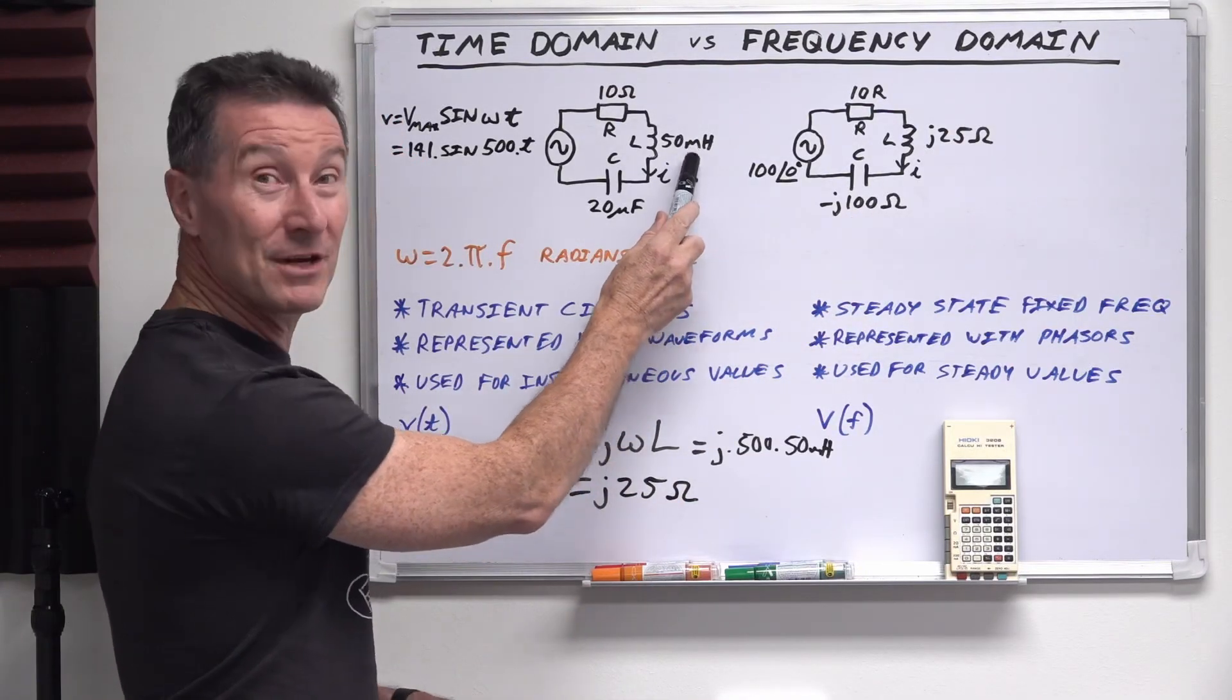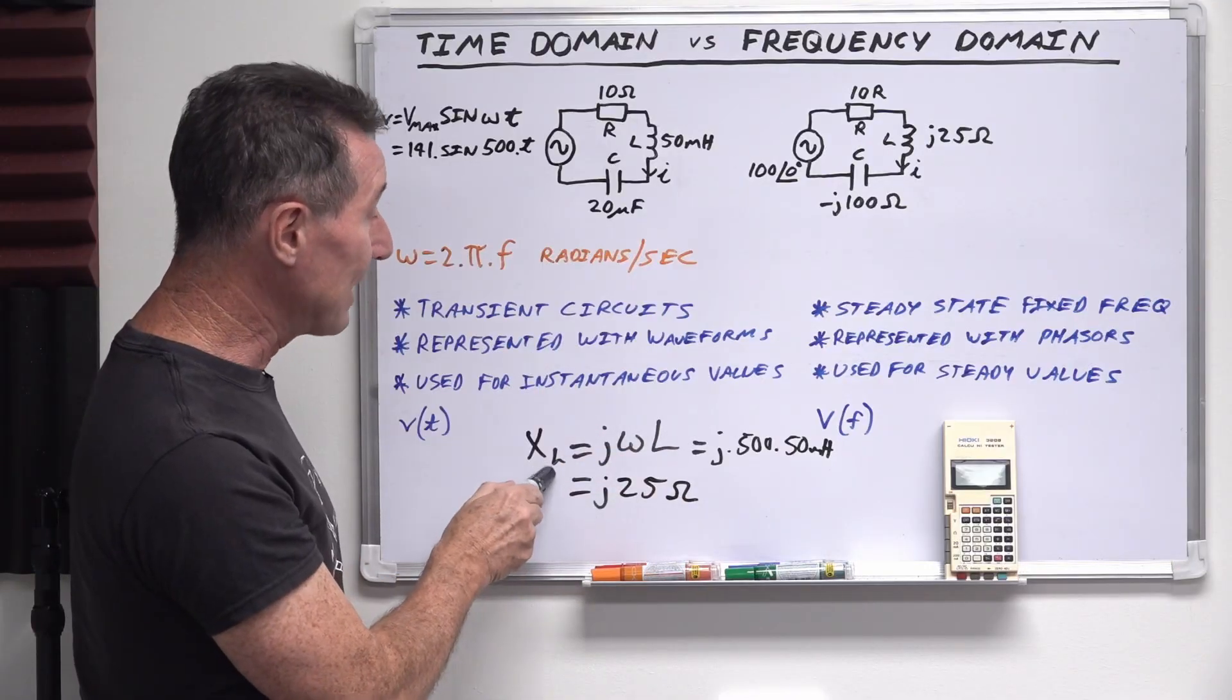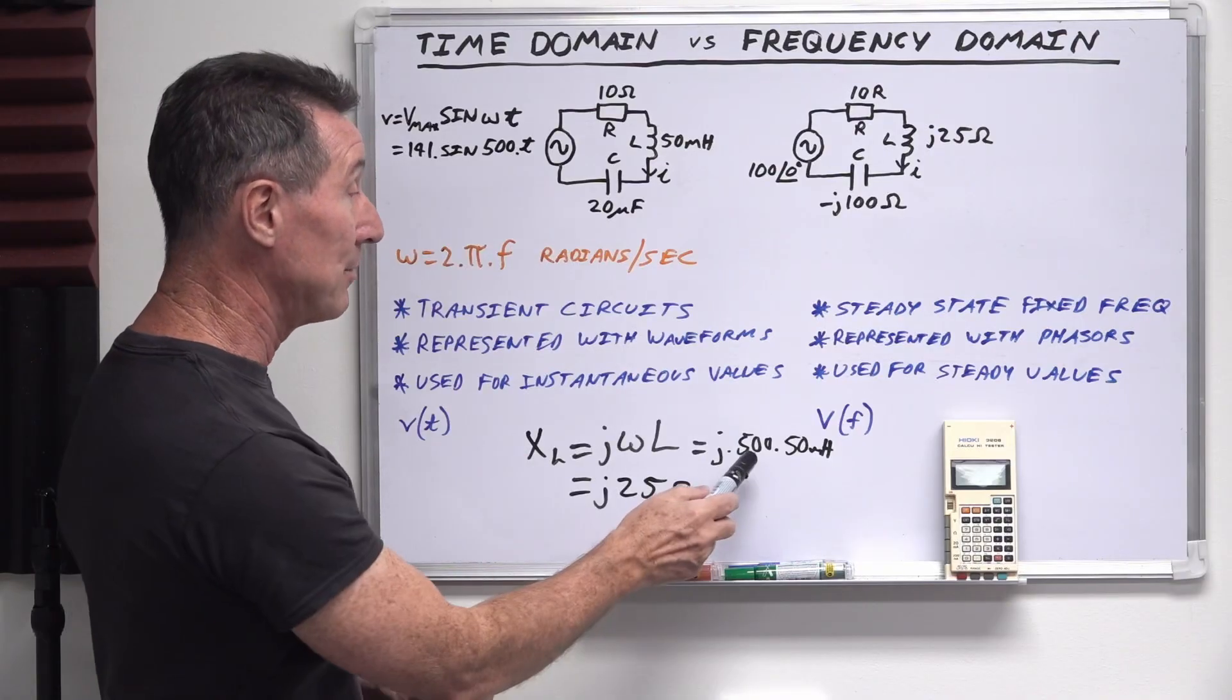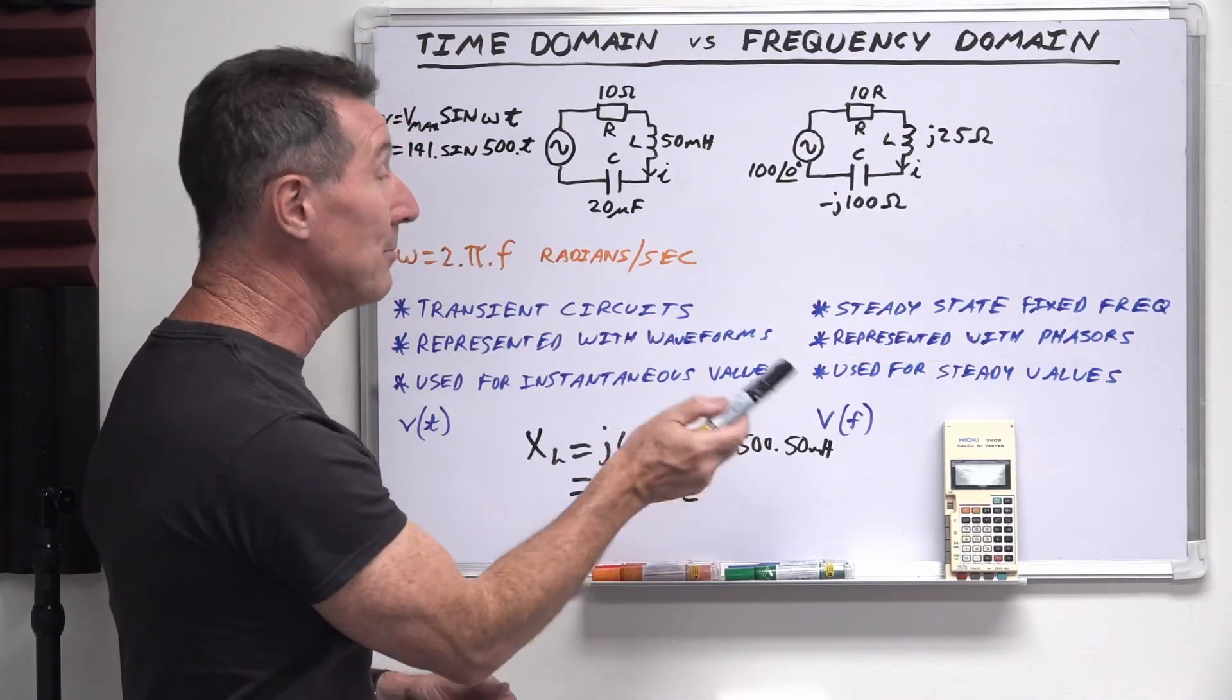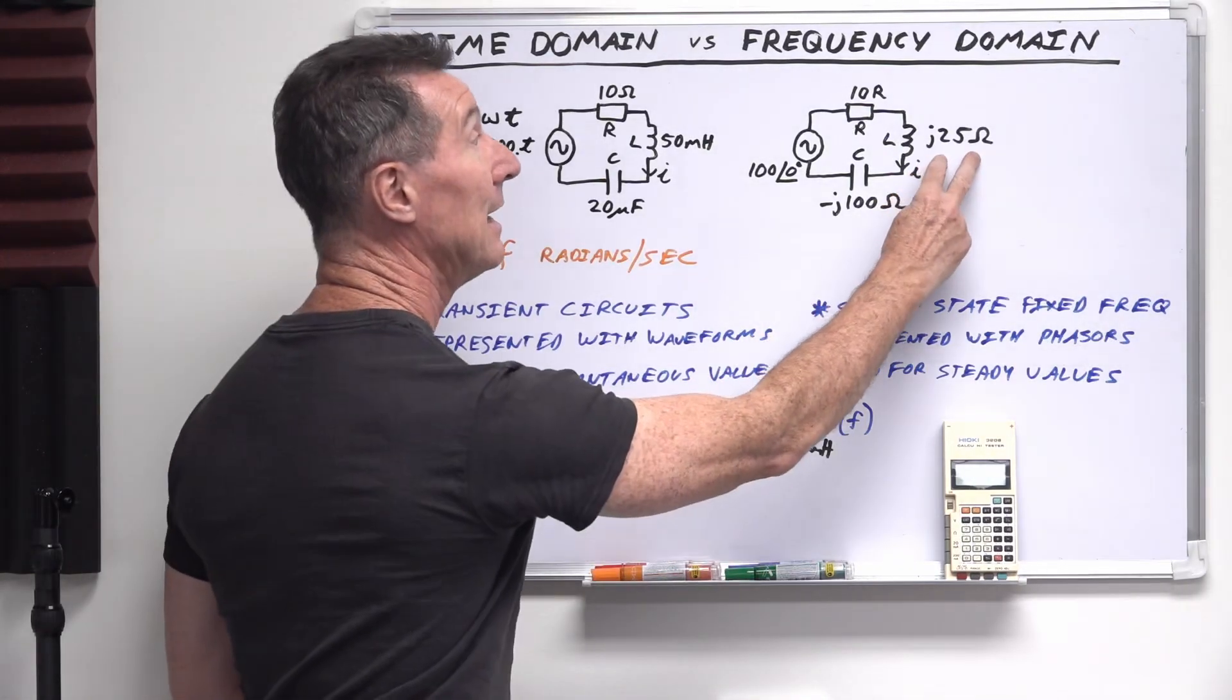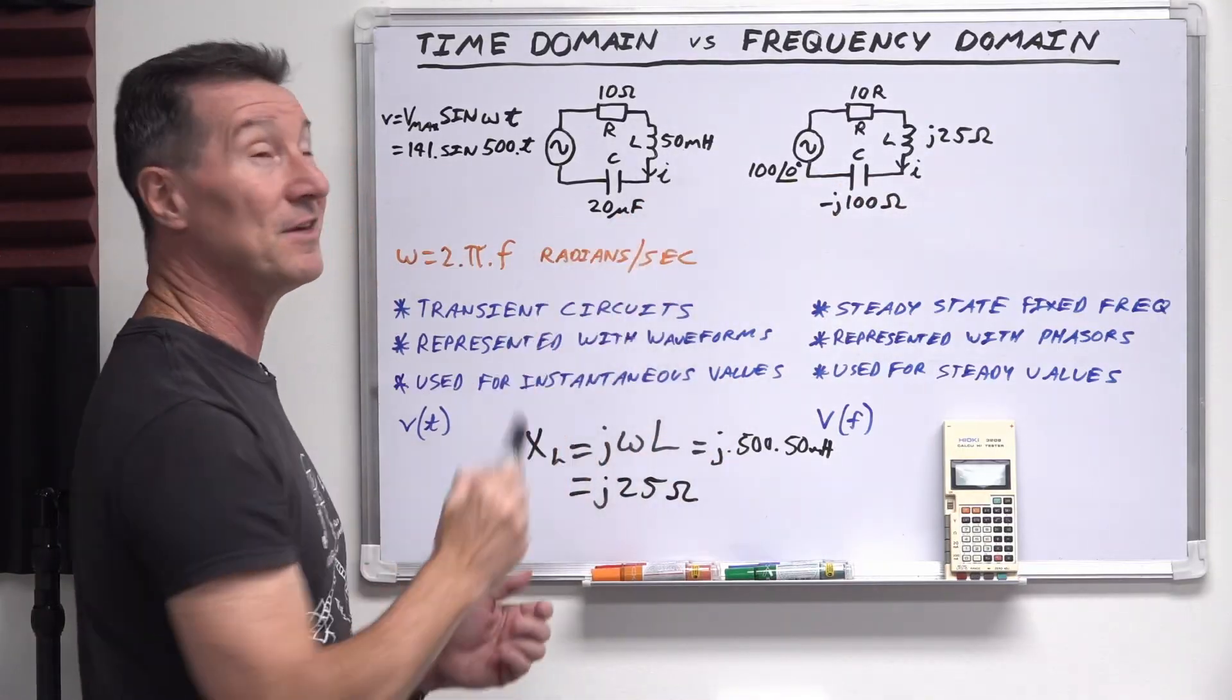And likewise for our 50 millihenry inductor here, remember our inductive reactants formula? XL equals J omega L. It's positive J this time. So that's just 500, which is our radian angular, our omega radians per second value there, times 50 millihenries. That gives us our J25 ohms. So we write that in our polar form there, J25 ohms instead of 50 millihenries.